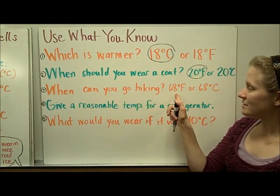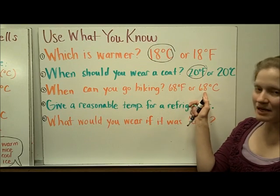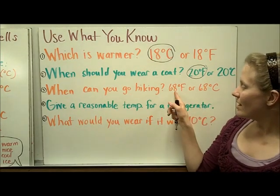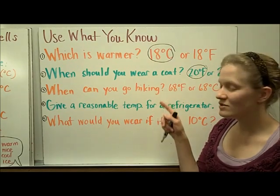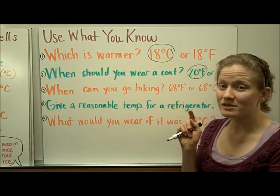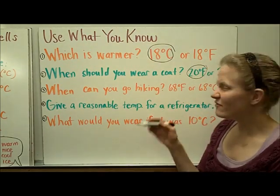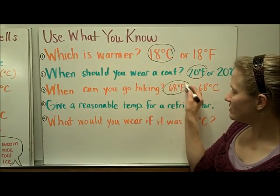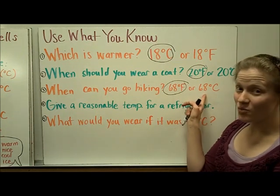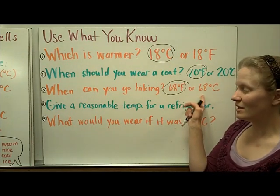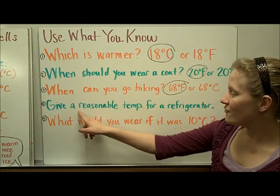When can you go hiking? 68 degrees Fahrenheit or 68 degrees Celsius? Well, I hope that this number rings a bell. That 68 degrees you might have heard a minute ago was about room temperature. And that would be definitely a comfortable time to go hiking. 68 degrees Celsius would be pretty hot. Remember that 30 is warm, so 68 must be really hot.